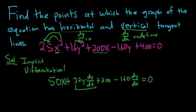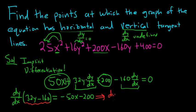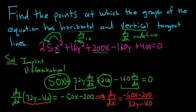Now we'll factor out dy/dx from the two terms: dy/dx times (32y minus 160). Then we subtract the remaining terms to the right-hand side, giving us negative 50x minus 200. To finish, we divide everything by that piece, so dy/dx equals (negative 50x minus 200) over (32y minus 160). The derivative is the slope of the tangent line — horizontal when slope is 0, vertical when undefined.